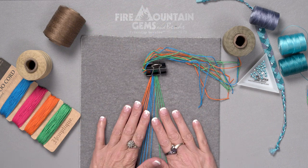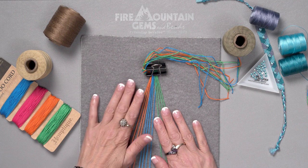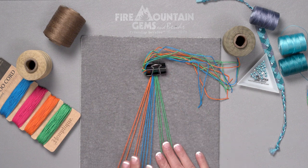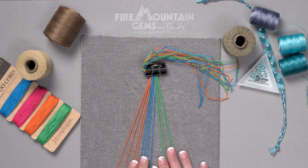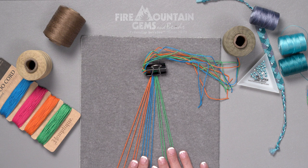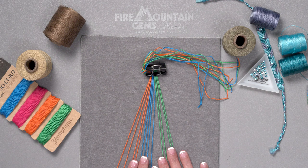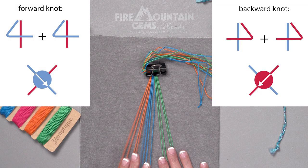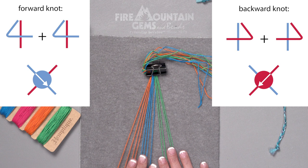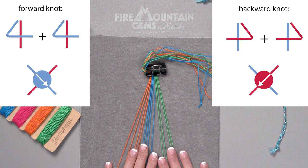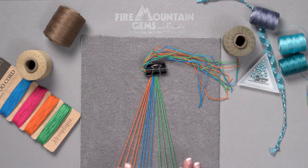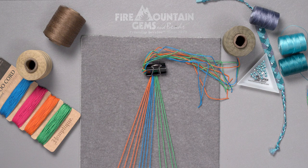So I have gone ahead and separated my cords to the four orange, four blue, four green. For this specific project, you're going to be doing two different types of knots. You are going to be doing the forward knot and the backward knots. You also are only going to be working with two colors at a time. So whichever side you start, whether it's left or right, doesn't matter. It's just you're going to take two colors at a time.